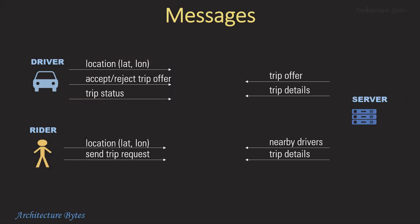Here are some of the messages exchanged between the driver, rider, and backend server. The driver sends location updates every few seconds, accepts or rejects trips offered, and sends trip status updates once a ride starts. The rider sends location updates when online and sends trip requests. The server sends trip offers and trip details to the driver, and information on nearby drivers and trip details to the rider.